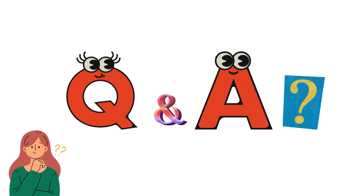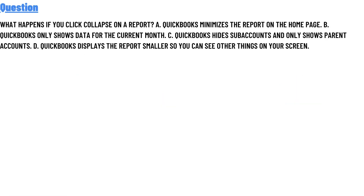Today's question is: what happens if you click collapse on the report option? Option A: QuickBooks minimizes the reports on the home page. Option B: QuickBooks only shows data for the current month. Option C: QuickBooks hides sub-accounts and only shows the parent account. Option D: QuickBooks displays the report so you can see other things on your screen.